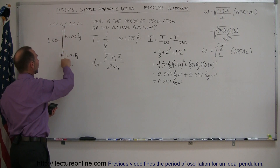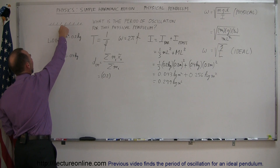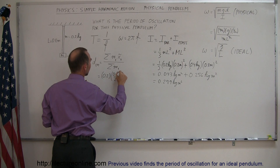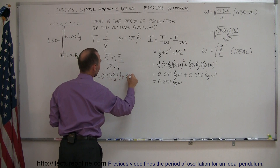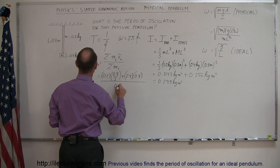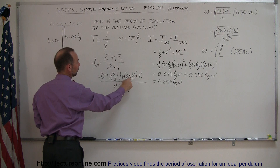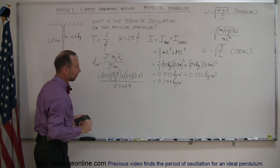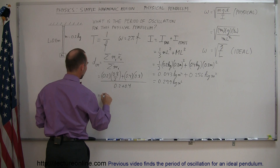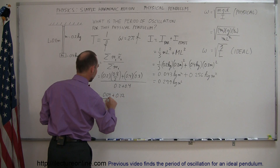We have two items. Take the mass of the bar, which is 0.2, times its center of mass distance — halfway along a uniform beam, so L over 2, which is 0.8 over 2. Plus the end mass, 0.4, times its center of mass distance, which is the full length of the beam, 0.8. Divide the whole thing by the total mass: 0.2 plus 0.4.